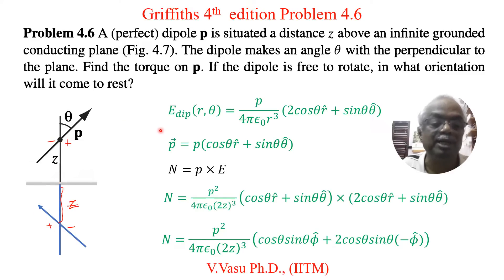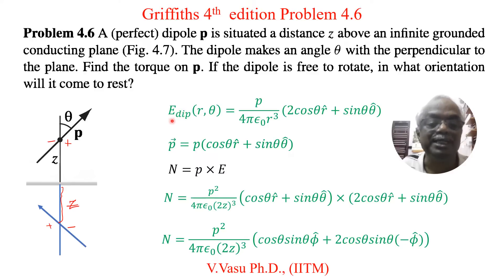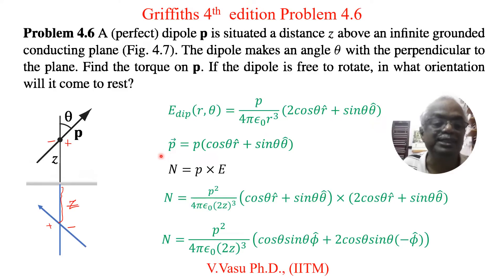Now we will come to the problem. As seen in previous problems 4.4 and 4.5, the electric field due to a dipole, as a function of R and theta, is equal to P divided by 4 pi epsilon R cubed, times the quantity (2 cos theta r-hat plus sin theta theta-hat). The dipole vector is represented by the dipole moment multiplied by (cos theta r-hat plus sin theta theta-hat).